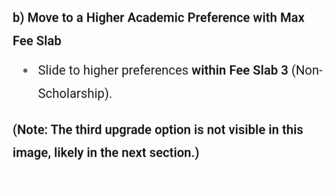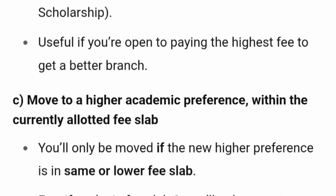Type B upgrade is a move to a higher academic preference with a maximum slab fee — the student is saying they are ready to pay up to the higher slab fee, such as fee slab 3. These students are basically open to paying the highest fee in order to get a better branch.